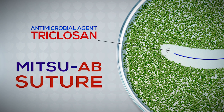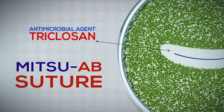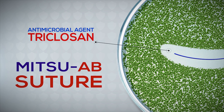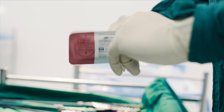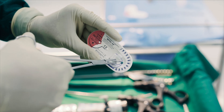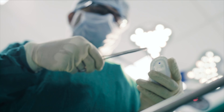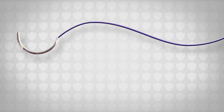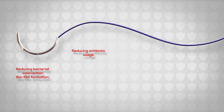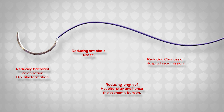This shows that triclosan in Mitsu AB inhibits and does not allow bacterial growth and bacterial colonization on sutures — it offers a safety shield. Mitsu AB is a braided absorbable suture made up of biodegradable polymer, that is, polyglactin 910, and is coated with the powerful antimicrobial agent triclosan. Mitsu AB provides reducing bacterial colonization, biofilm formation, reducing antibiotic usage, reducing chances of hospital readmission, reducing the length of hospital stay and hence the economic burden, and reducing complications in diabetic and immune-compromised patients.